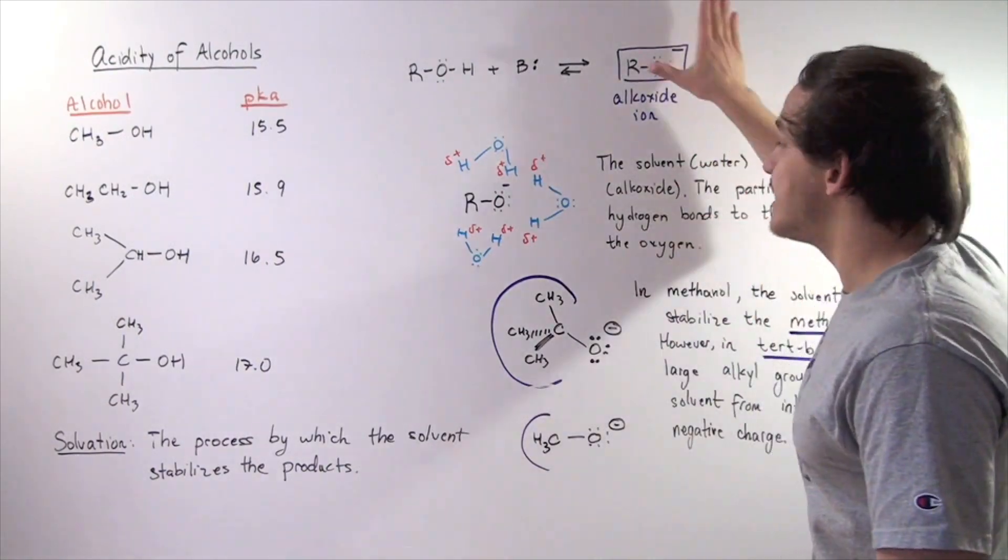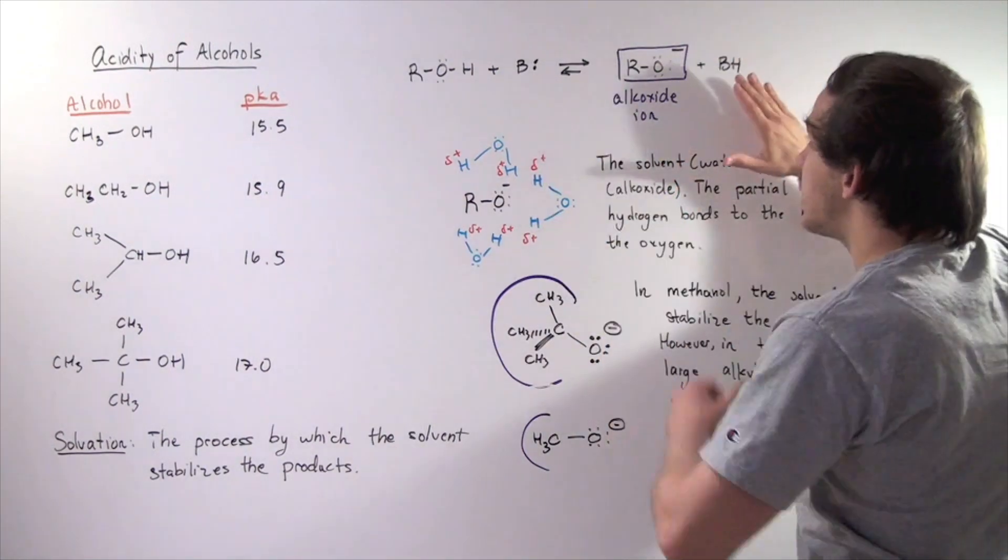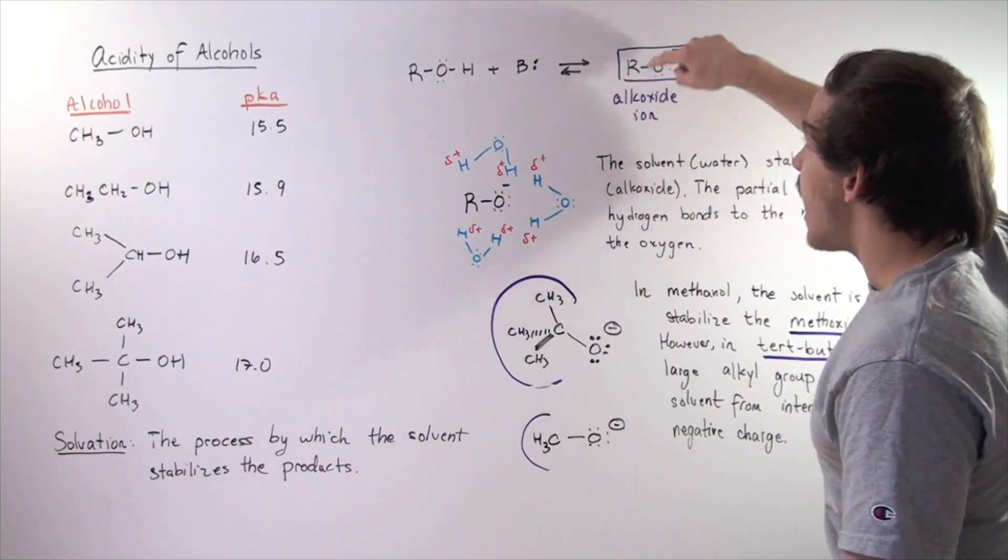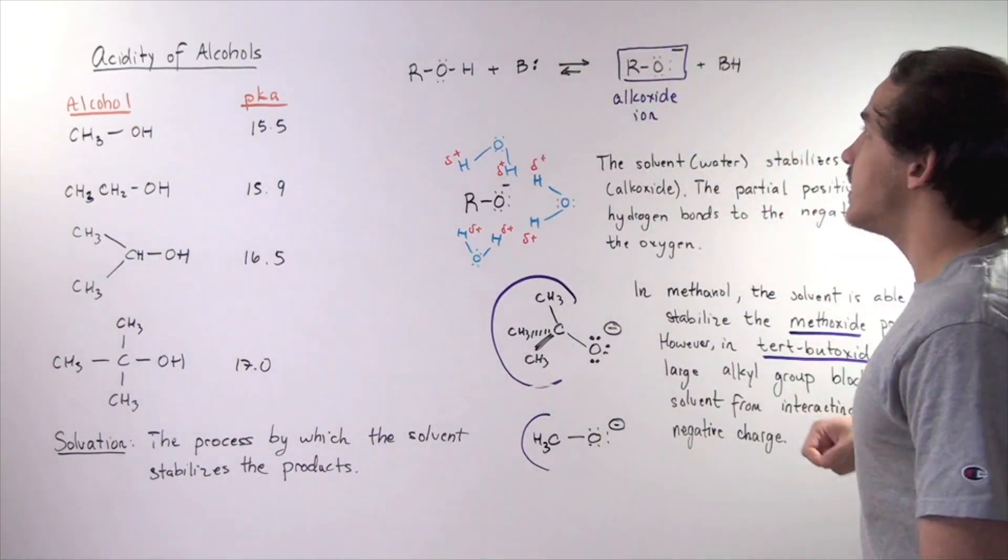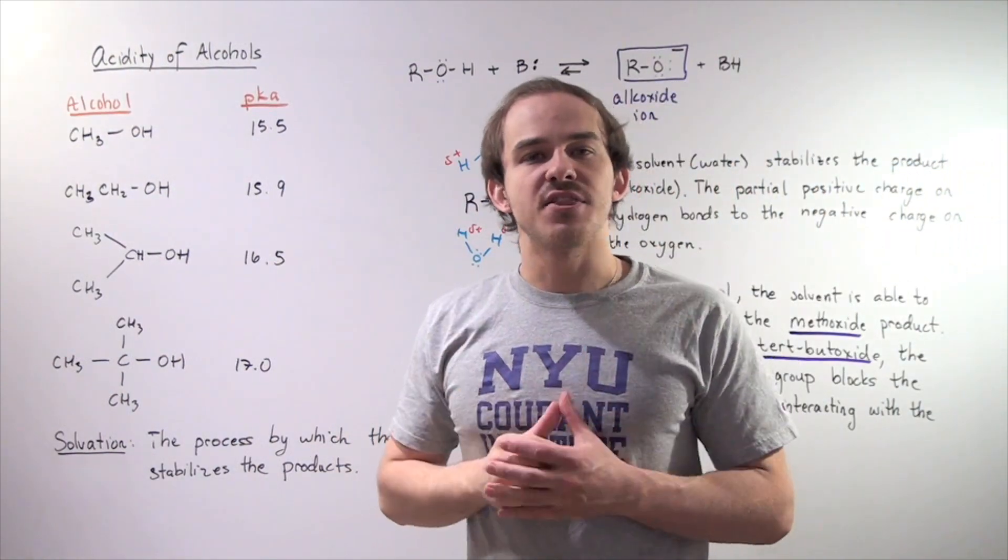So what happens is the water solvent molecules surround our negatively charged oxygen, this alkoxide ion, and they orient in a way to stabilize that charge.